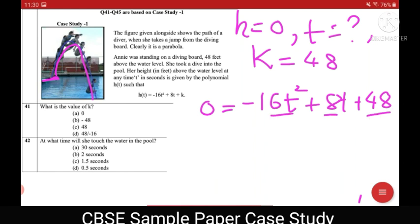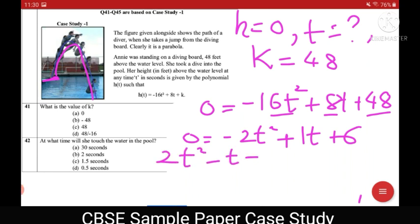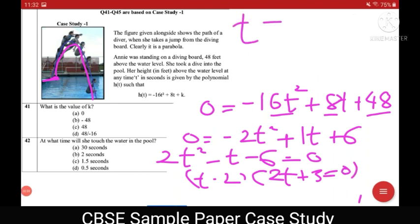You can see 8 is common throughout. So I shall divide throughout by 8. 0 is equal to minus 2t square plus 1t plus 6. Bringing to left hand side I get 2t square minus t minus 6 is equal to 0. Splitting the middle term I get t minus 2 into 2t plus 3 is equal to 0. Either t is equal to 2 or t is equal to minus 3 by 2. Clearly this will be rejected and b option is the right answer t is equal to 2.